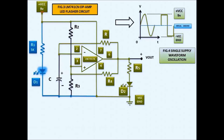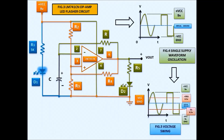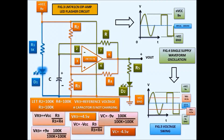A virtual ground is created located at the center. Current flows into R2, R3, and R4, causing oscillation and forming a voltage divider. There is now a potential difference between the two inputs — that is the reference voltage. When the capacitor is not charging, it creates a voltage divider between R3 and R4. We use 100K for R2, R3, and R4.